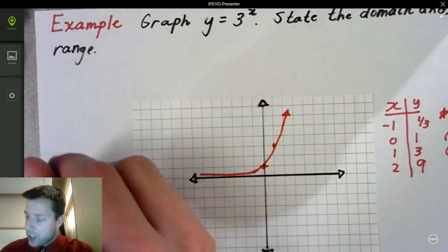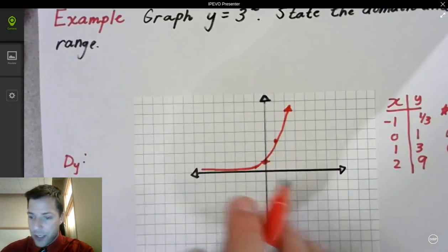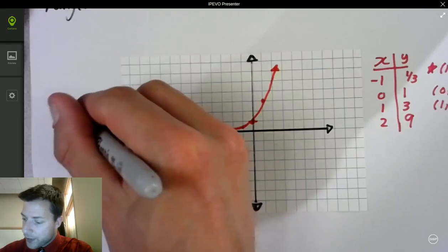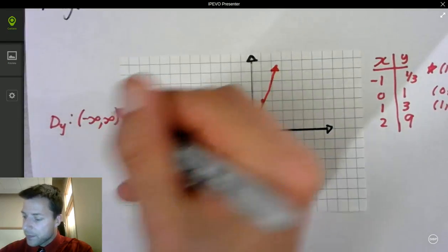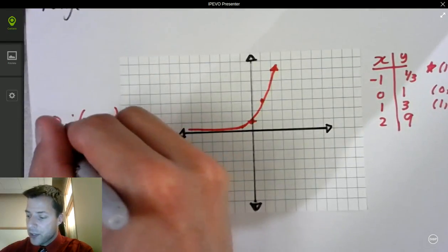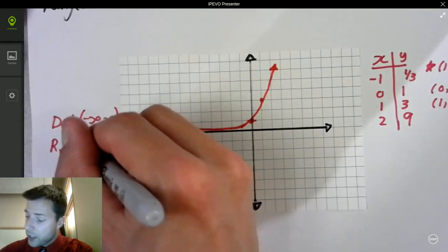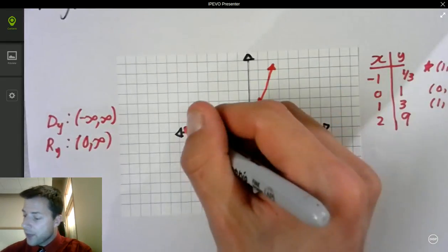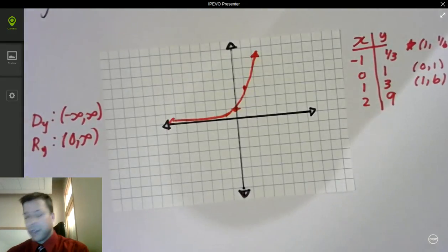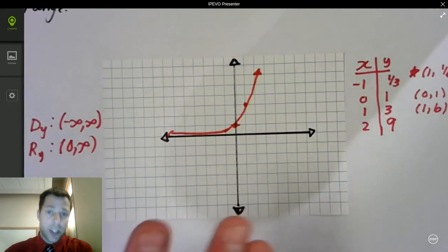It asks you to state the domain and range. The domain of y, again, is going to be all real numbers. And the range of y is just going to be 0 to infinity positive. So that's how we graph general forms of y equals b to the x for exponential growth.